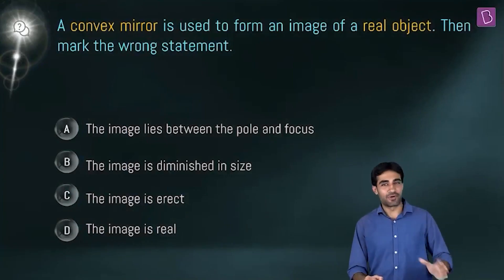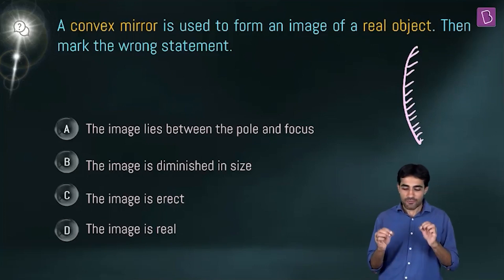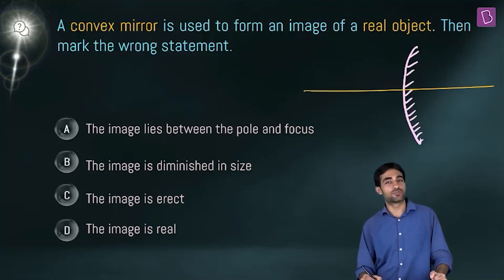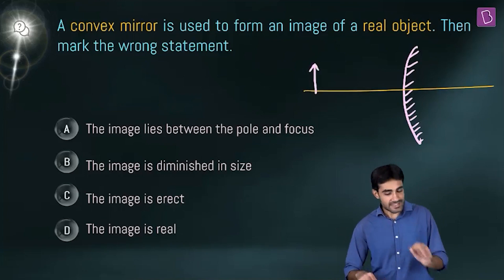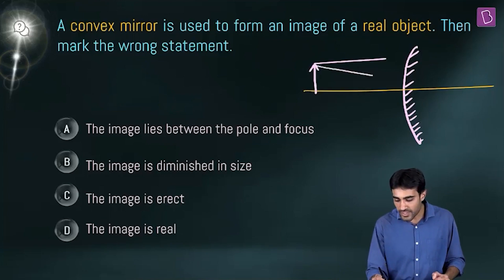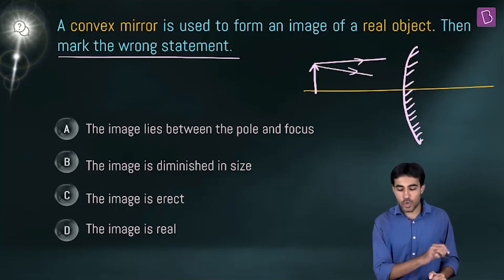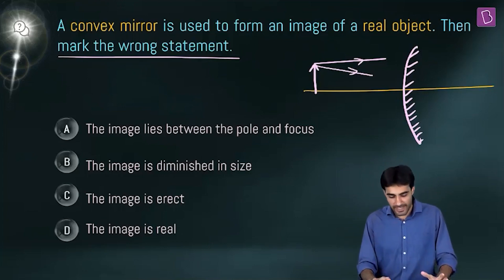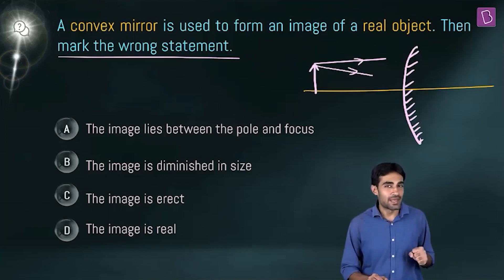Let's begin with a simple question about a convex mirror. A convex mirror is used to form an image of a real object. We have a real object in our situation — the incident light rays are diverging from this object, so it is a real object. We have to mark the wrong statement, so we will read each statement carefully. Statement A says the image lies between the pole and focus.